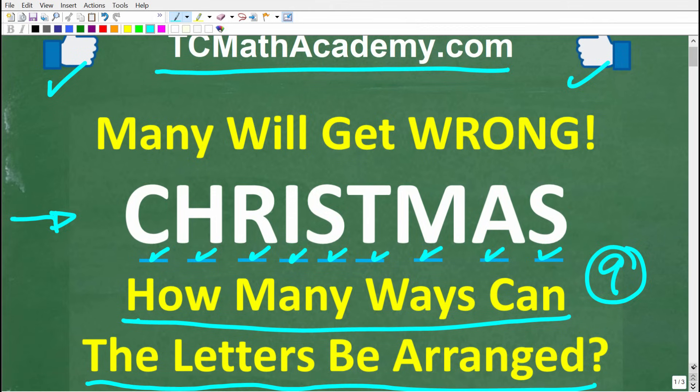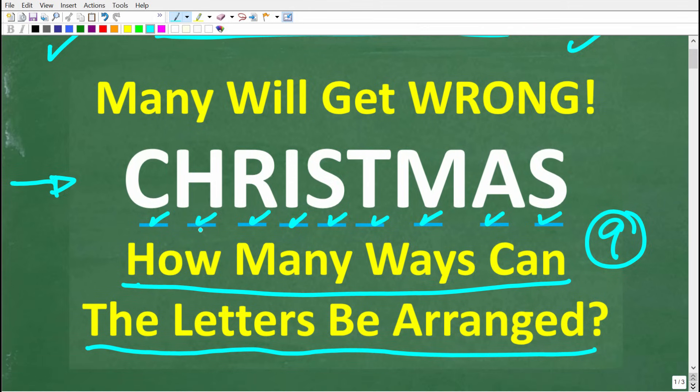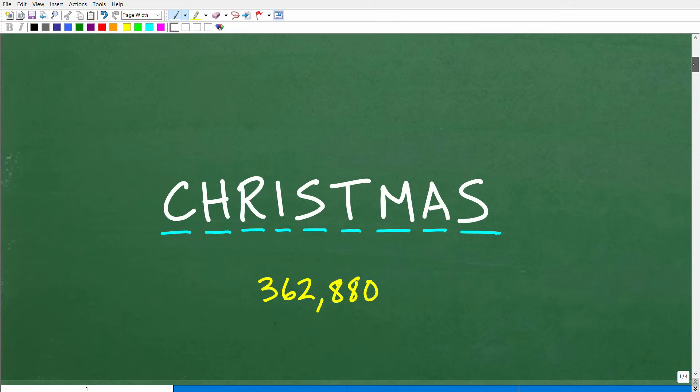All right. So here we have the word Christmas, and it has nine letters. So the question is, how many different ways can we arrange the letters of Christmas? Well, here is the answer. 362,880. There you go.